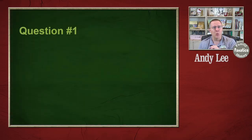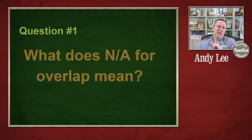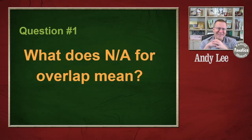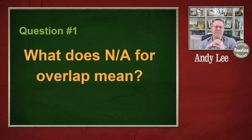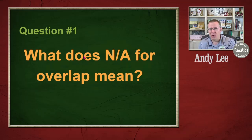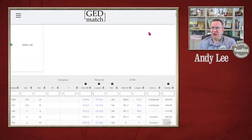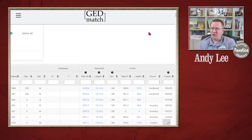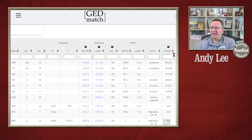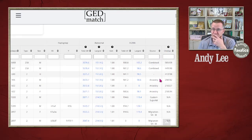Question number one is: what does the NA for overlap mean? Let's go over and take a look in GEDmatch. I've gone to the one-to-many tool and put in my kit. On the very last column, we have the overlap value.